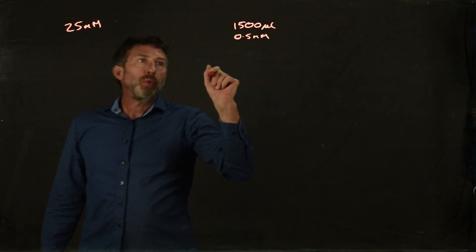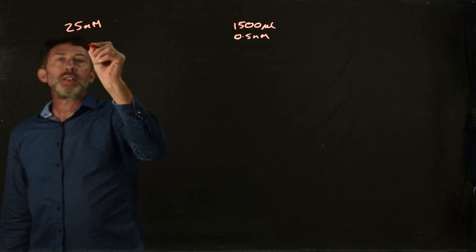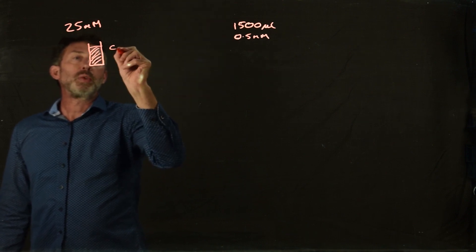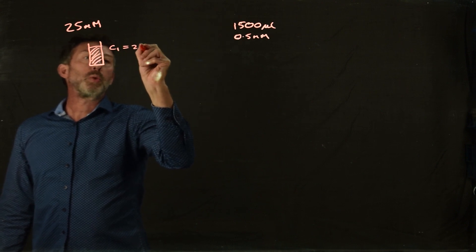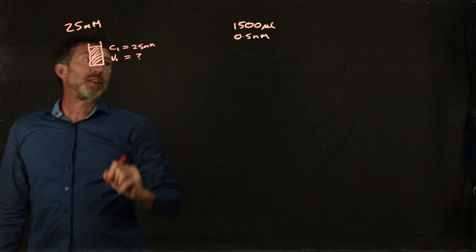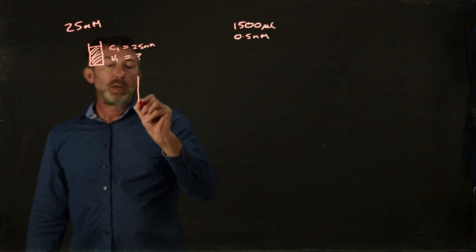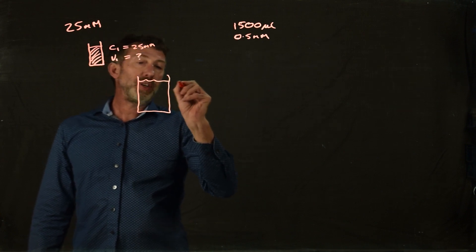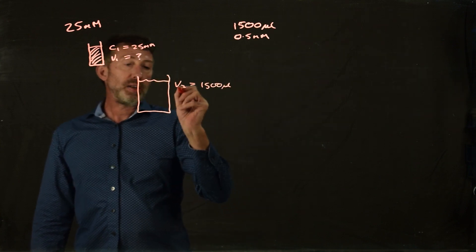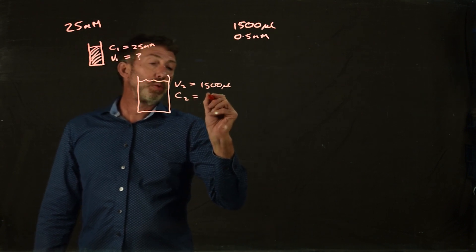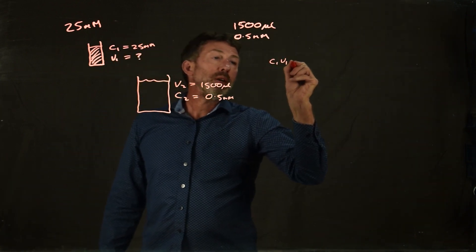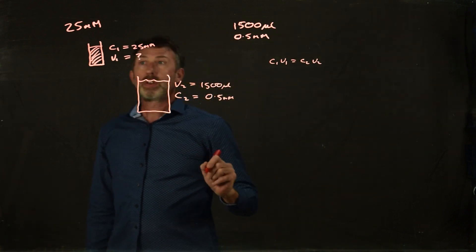The first thing we need to know is what volume of the stock solution we want to take. This is our stock solution — that's the bottle I've just shown you — and it's concentrated, so we're going to call this C1. C1 is equal to 25 millimolar. V1 is the volume we want to take, which is unknown at the moment. We're going to dilute it down so we end up with 1500 microliters, so V2 is equal to 1500 microliters — that's 1.5 mL — and C2 is equal to 0.5 millimolar. So we can invoke C1V1 = C2V2.